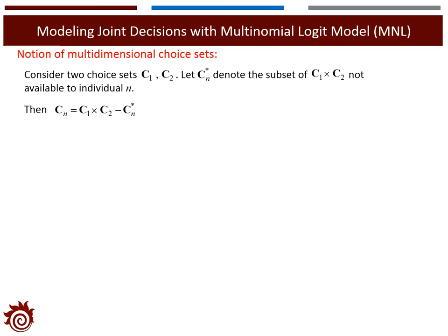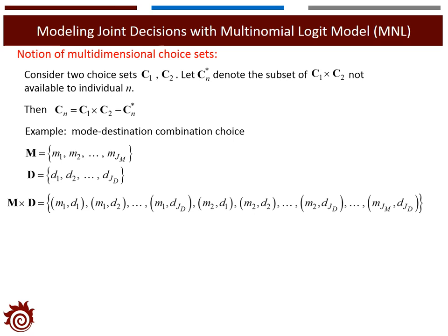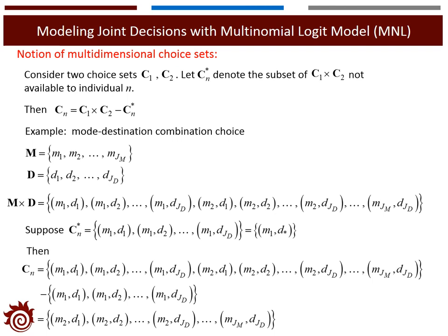We can check the definitions through a simple example: the mode-destination combination choice. Assume that we have a set of modes available for all individuals, capital M, and also a set of destinations, capital D. Then M times D would be the complete mode-destination combinations available for all individuals. We also assume that for individual n, mode 1 is not available. Then Cn, the available choices for individual n, would be M times D minus Cn star.